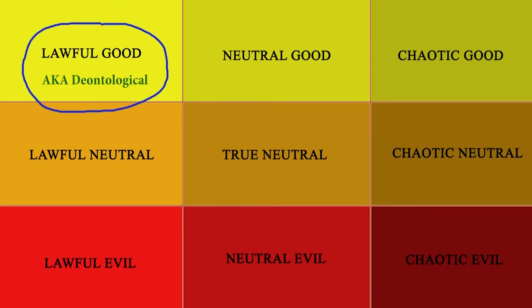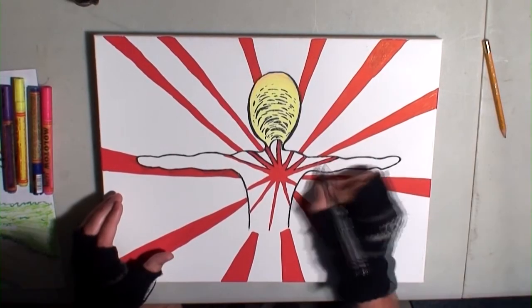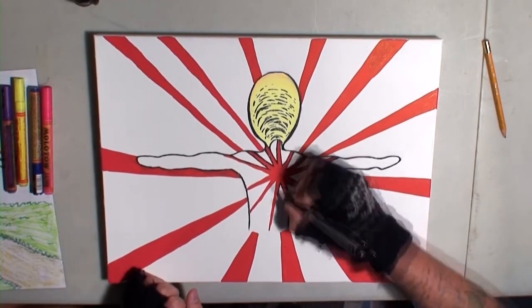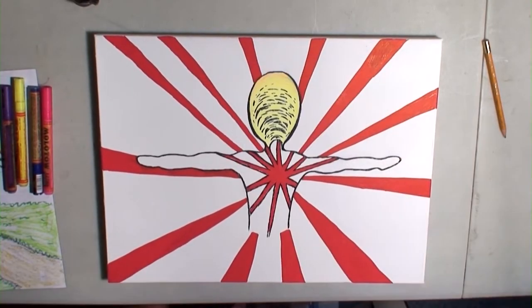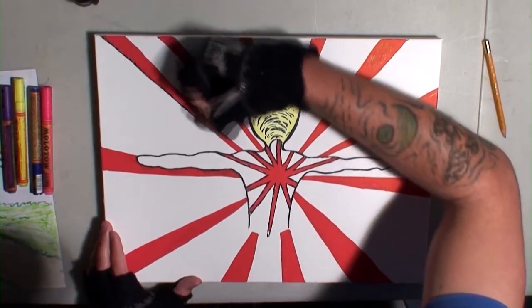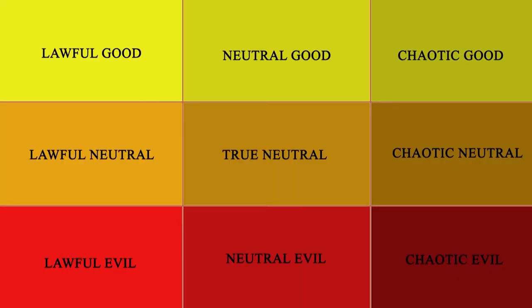Antinomian is the opposite of that, meaning you base your choices on a whim, completely unprincipled and not following the laws set in place for therapists. The word literally means against a law, so for character alignment, it would be chaotic good.